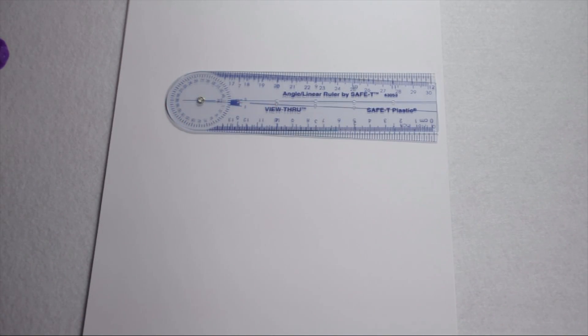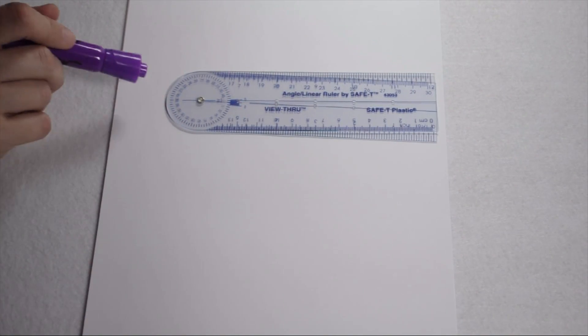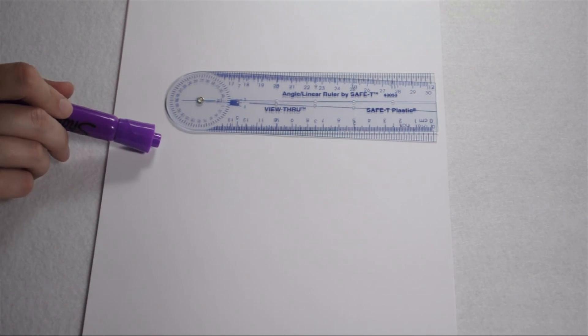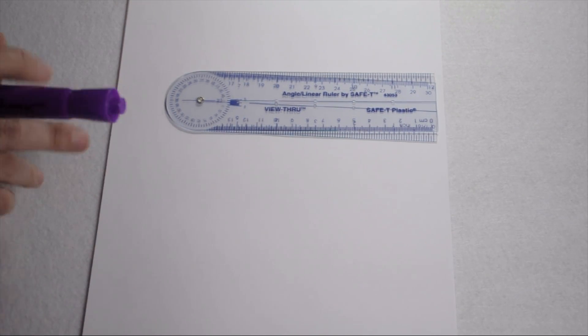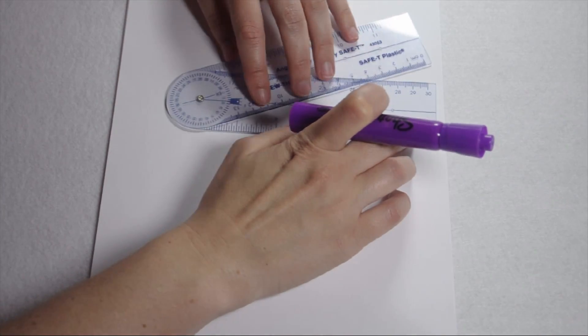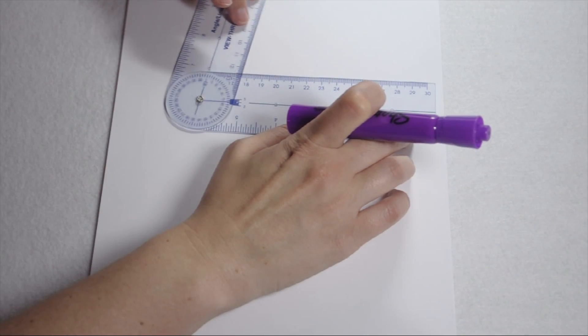We need to draw a 250 degree reflex angle. An advantage of an angle ruler is that it measures all the way up to 360 degrees. So we can simply keep turning until we hit that 250 degrees. As I turn the arm, I can see my degrees increasing.